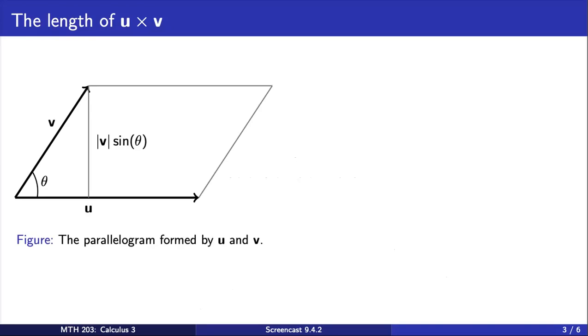These two vectors form the following parallelogram. And using properties of the cross product, we can show that the length of the cross product of u and v is equal to the product of the length of u, the length of v, and sine of theta. See your textbook for details about how to arrive at this.